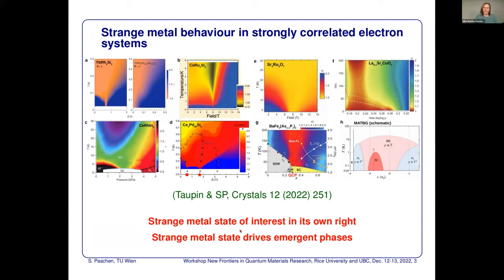There's a second aspect: these strange metal states frequently condense or drive new phases. For instance, a dome of superconductivity is centered around where the strange metal behavior extends to lowest temperature. That's seen in many of these systems, except when magnetic field is the tuning parameter, since magnetic field tends to kill superconductivity. But there are also other emergent phases, which I'll address at the end of the talk.